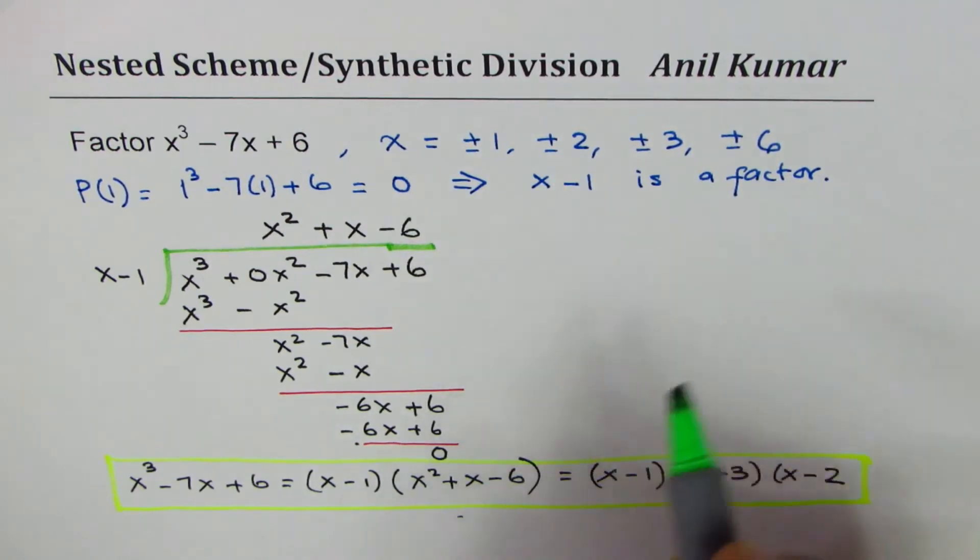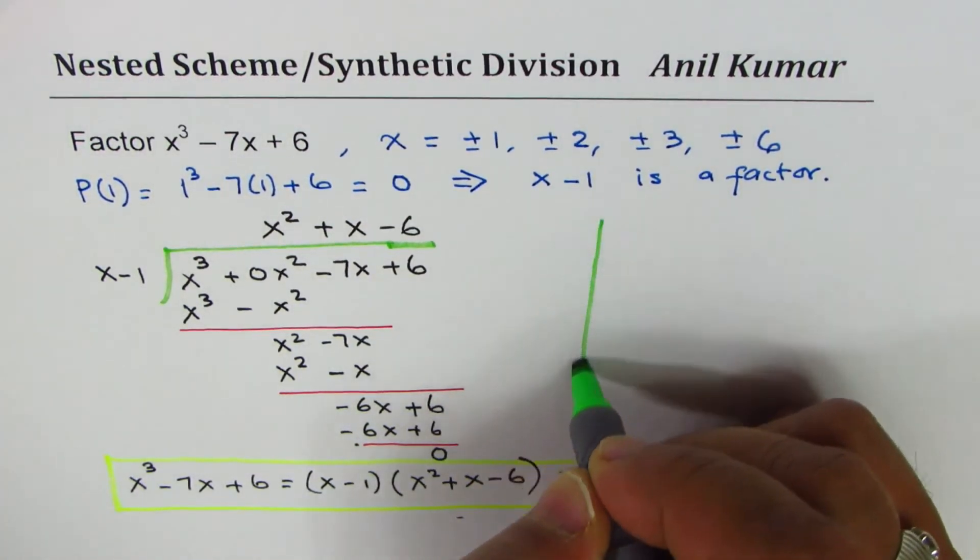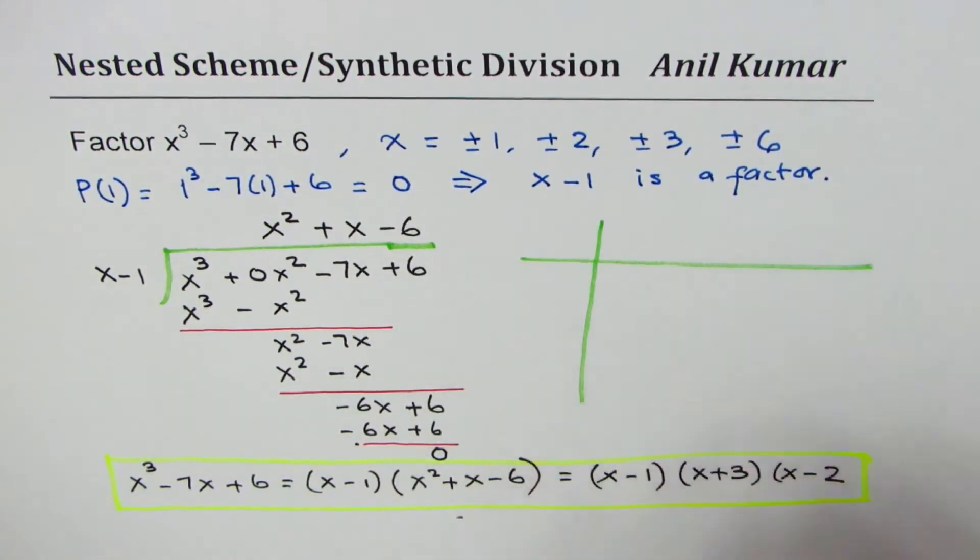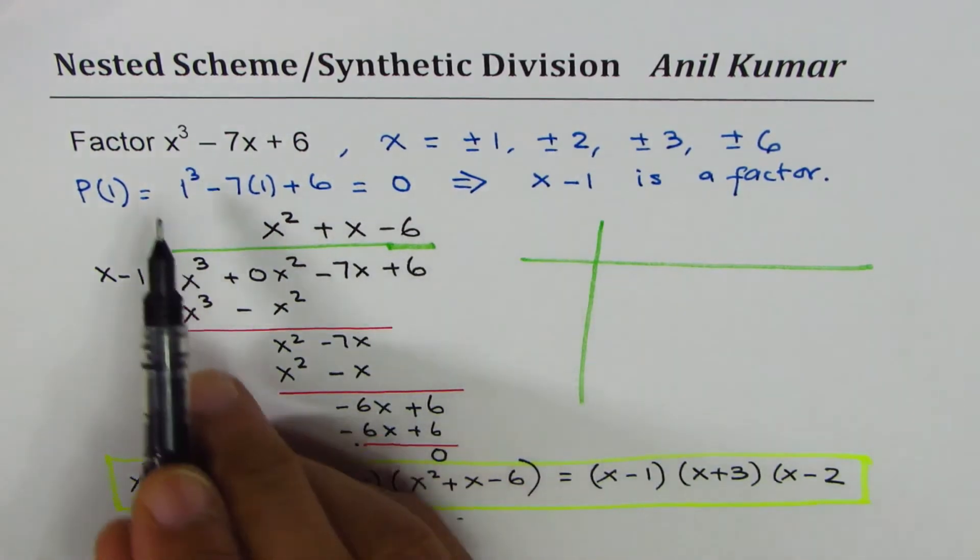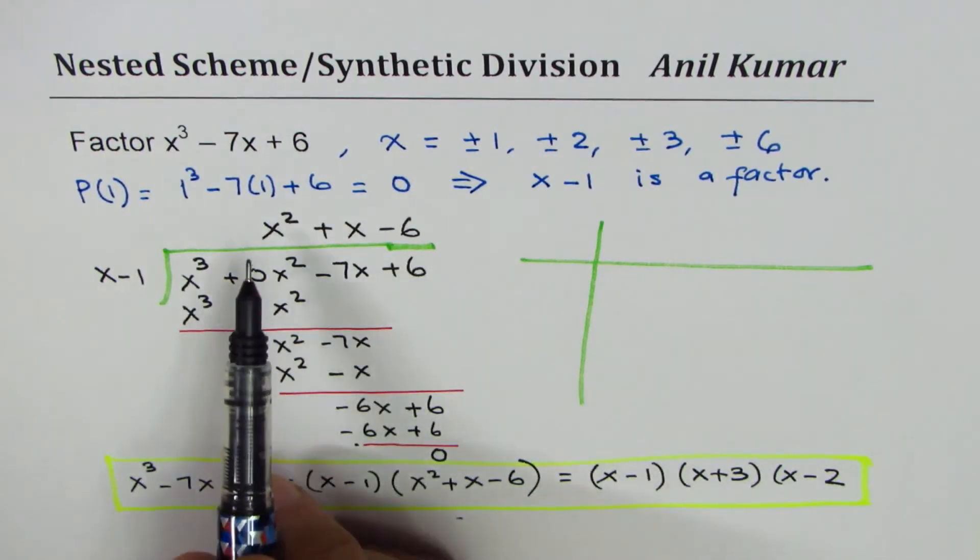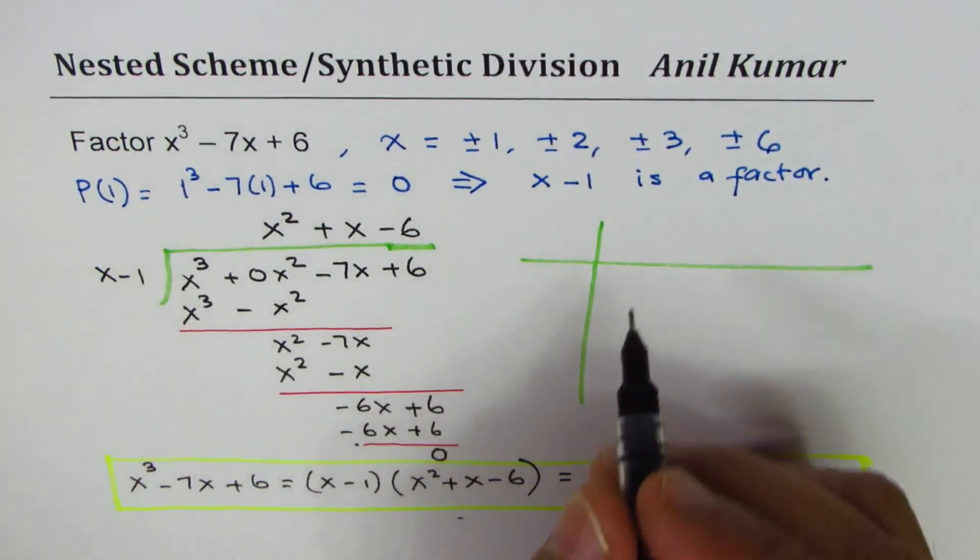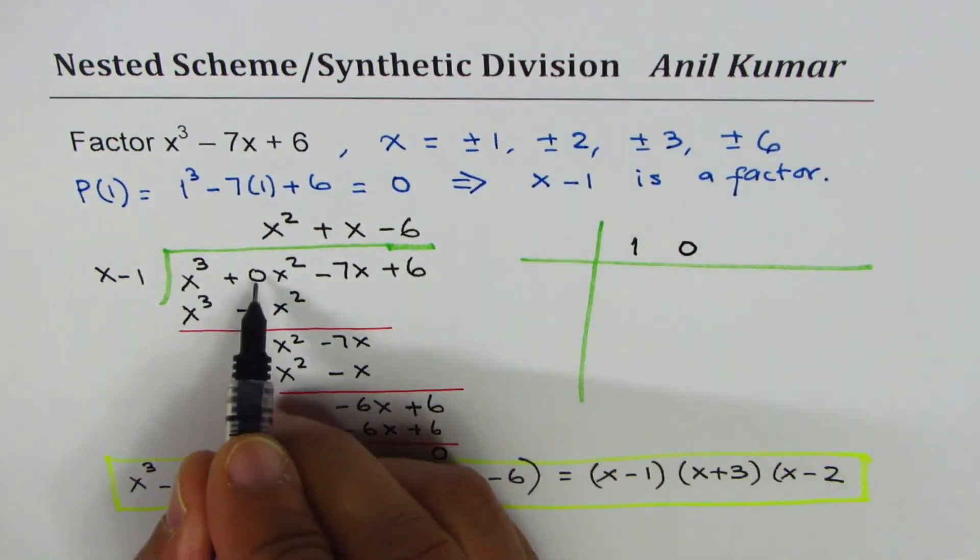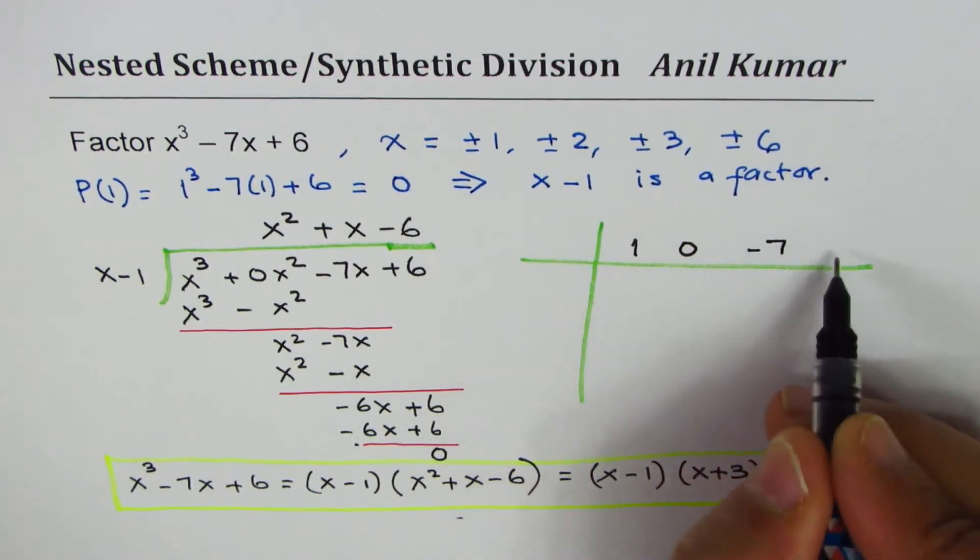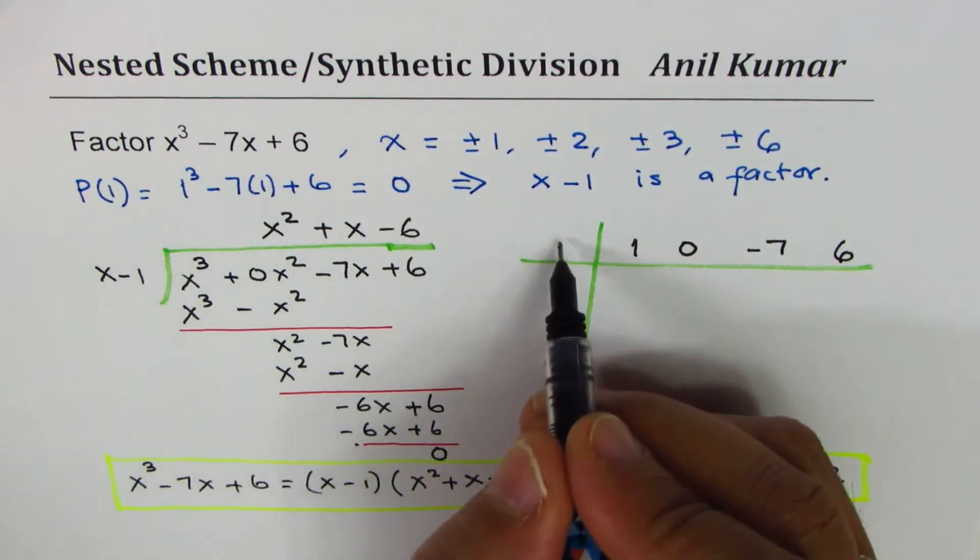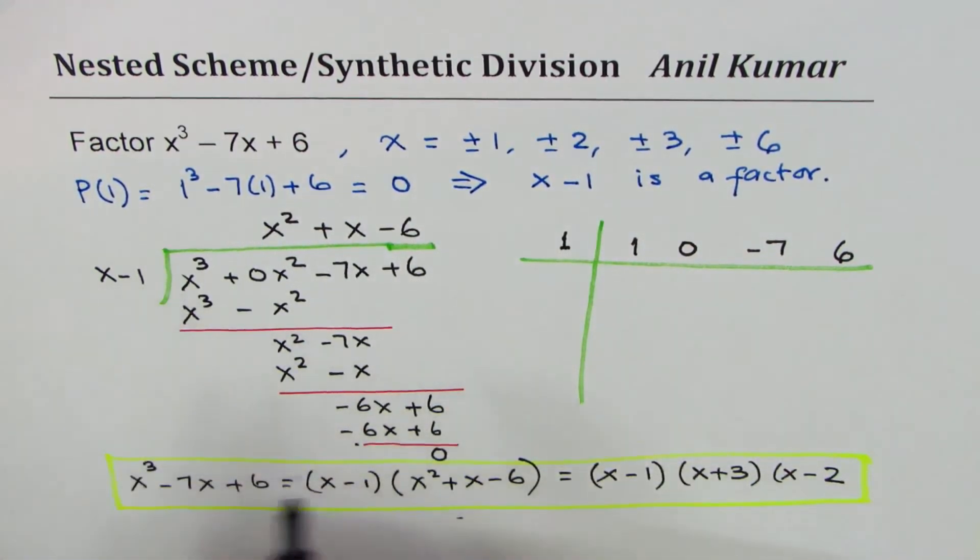I left this space purposely so that we can also do nested scheme or synthetic division here. So in synthetic division we actually write down only the coefficients. The coefficients here are 1 for x cube, 0 for placeholder for x square, minus 7, and 6.